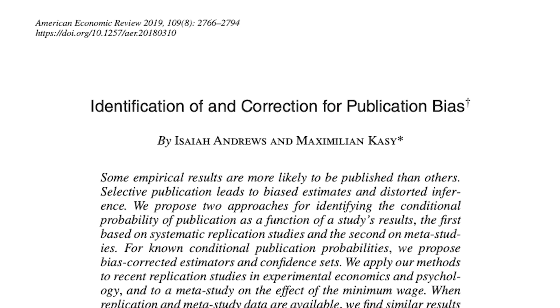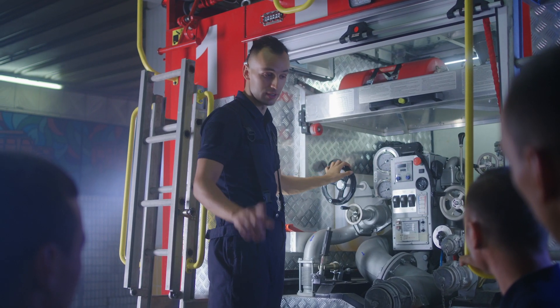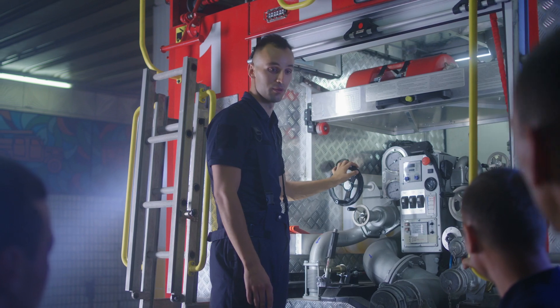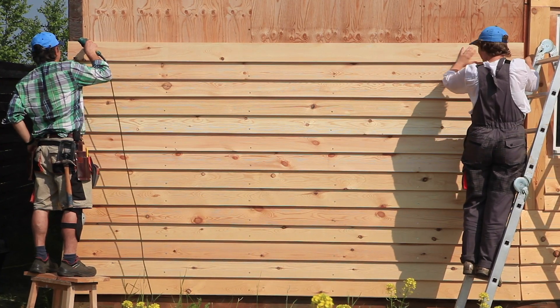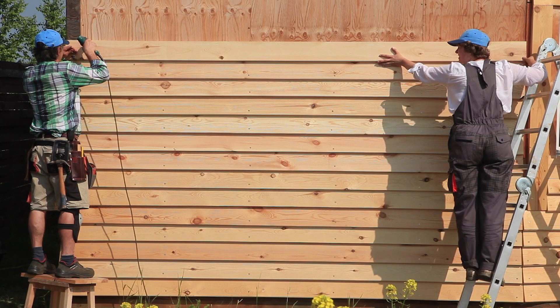Another area that I've worked on is publication bias. The idea is that some sorts of scientific findings are more exciting and more likely to be published than others. Think, for example, of job training programs. Imagine you've got 20 different research groups at different universities studying different job training programs. If the groups find that these job training programs are very effective, that research is more likely to be published than if they find that these programs don't do much of anything. Because if I have an empirical paper and I say I tried this job training program and it doesn't work, that's a less exciting answer than saying it produced fantastic results.